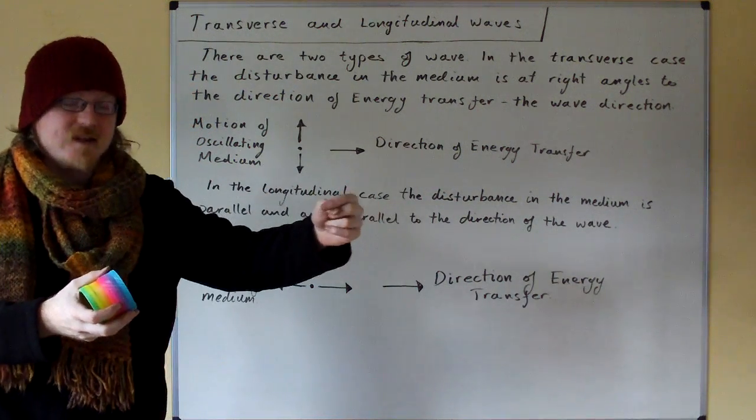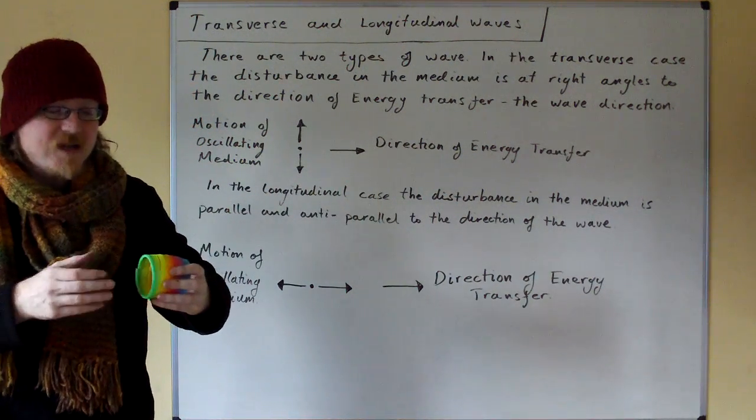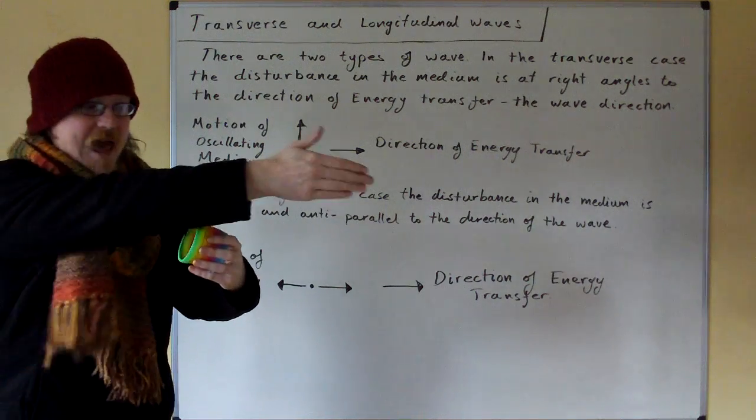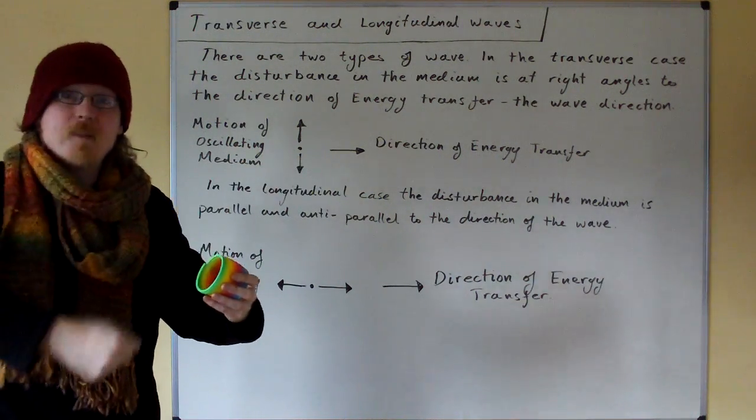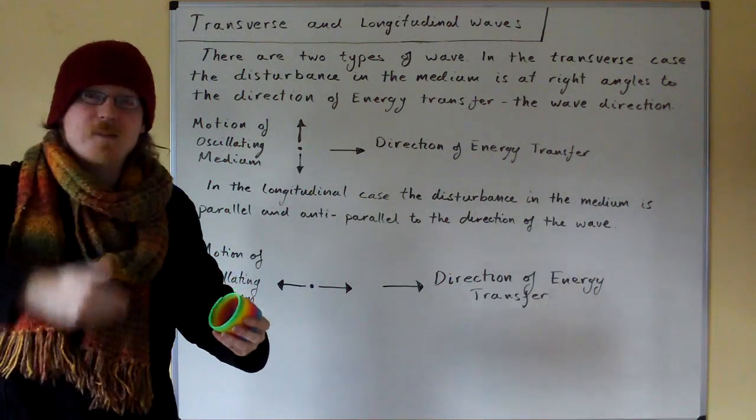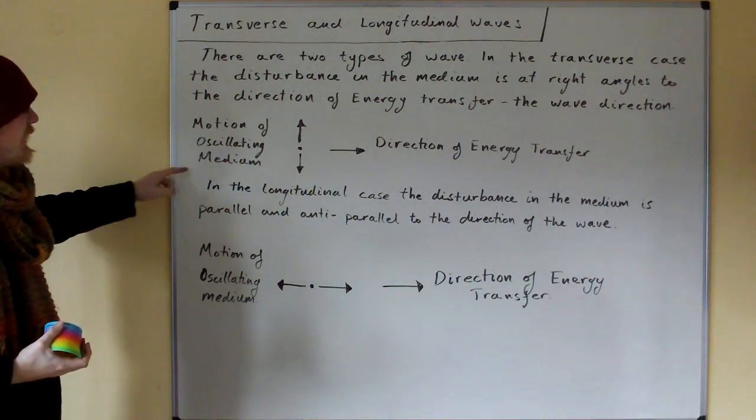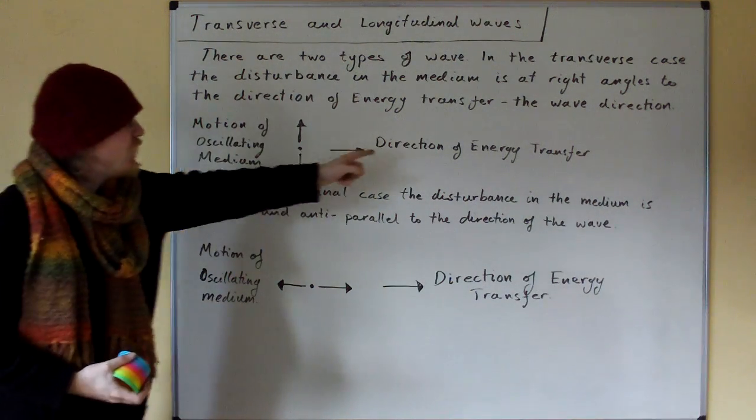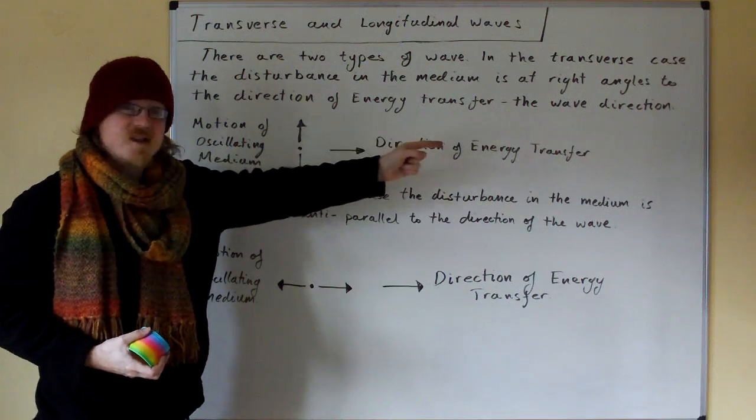Now the wave is reflecting at this end somewhat, but basically the wave is travelling that way, but the disturbance is up and down. So the wave is travelling from side to side and the disturbance is up and down. Motion of oscillating medium up and down, direction of energy transfer to the side.